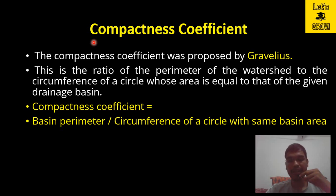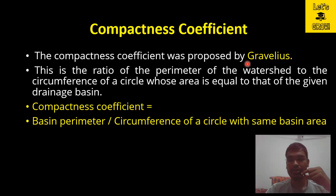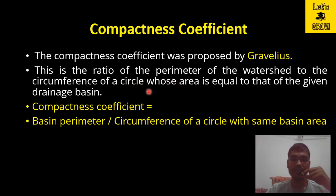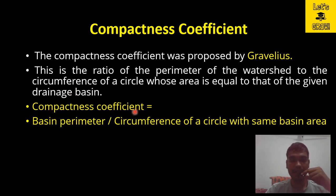The compactness coefficient was proposed by Gravelius. He defined the compactness coefficient as the ratio of the perimeter of the watershed to the circumference of a circle whose area is equal to that of the given drainage basin. Mathematically, we can write the compactness coefficient as basin perimeter divided by the circumference of a circle with the same basin area.